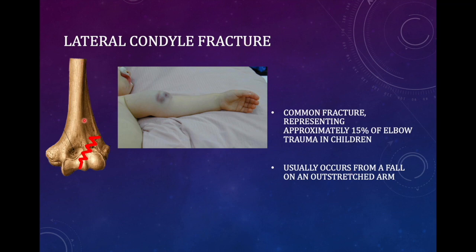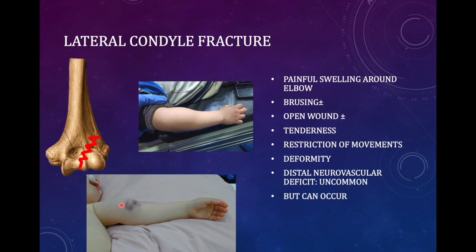Now coming to lateral condyle fractures. The supracondylar fracture line passes above the condyles, while the lateral condyle fracture line involves the lateral condyle and capitulum. It is the second most common elbow injury in children after supracondylar fractures, with 50% incidence. The mechanism is similar — fall on an outstretched hand. Neurovascular episodes are uncommon because it is usually not a high-energy trauma, though rarely high-energy trauma can cause neurovascular injuries with lateral condyle fractures.